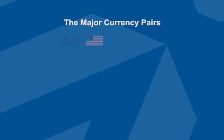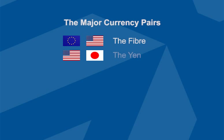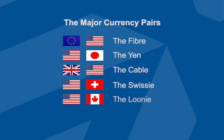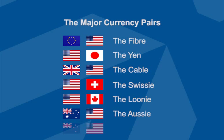There are also seven major currency pairs. The Euro/USD is nicknamed the Fiber, the USD/Yen is nicknamed the Yen, the GBP/USD is referred to as the Cable, the USD/Swiss Franc is called the Swissie, the USD/Canadian Dollar is nicknamed the Looney, the Australian Dollar/USD is nicknamed the Aussie, and the New Zealand Dollar/USD is referred to as the Kiwi.